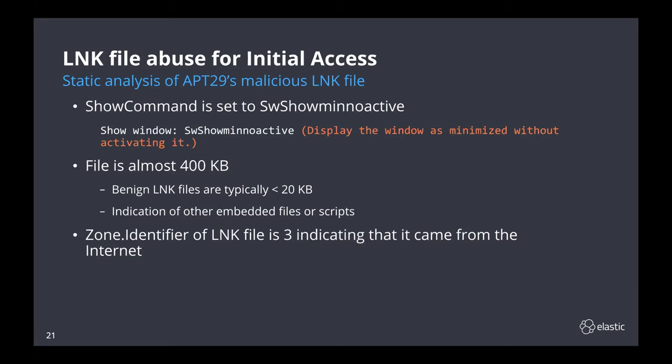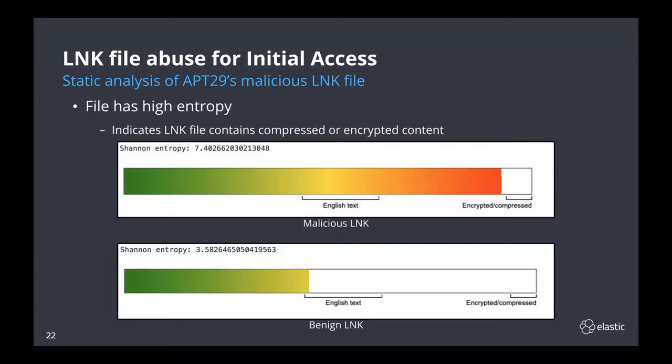The zone identifier is also a good one to look out for. Depending on the internet browser or application used to download the file, a zone ID alternate data stream will be added to the file to indicate it was downloaded from outside the host network — a zone ID greater than one typically means it came from outside the network. Another interesting feature is the entropy or randomness of link files. The top screenshot shows the entropy of the malicious link we've been discussing, and the bottom one shows the entropy of a benign Google Chrome shortcut. A link with high entropy can be an indicator that the file contains compressed or encrypted content. The number of suspicious features here really add up.